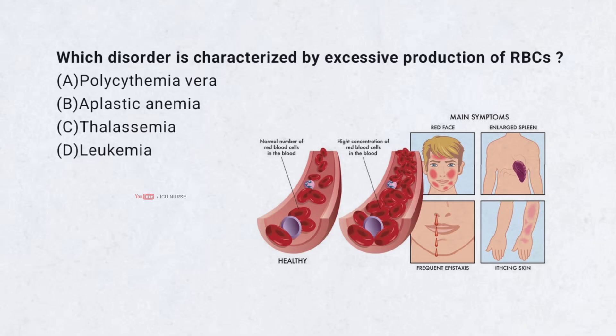Which disorder is characterized by excessive production of RBCs? A. Polycythemia vera, B. Aplastic anemia, C. Thalassemia, D. Leukemia. Correct answer: A. Polycythemia vera. Polycythemia vera is a myeloproliferative neoplasm causing overproduction of RBCs.